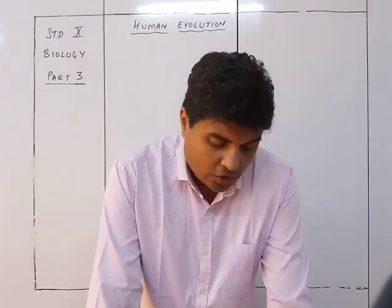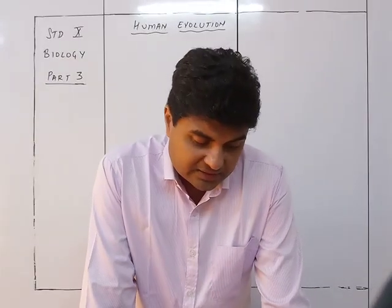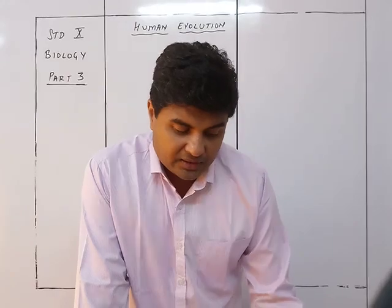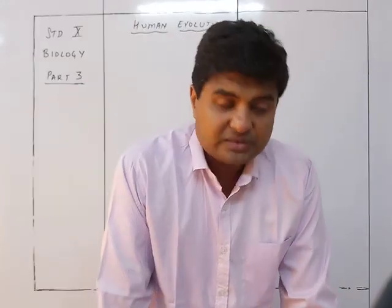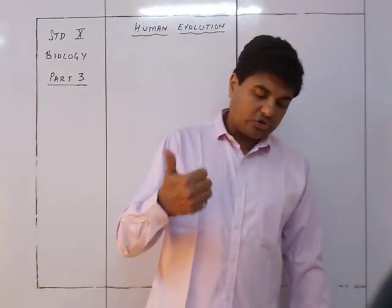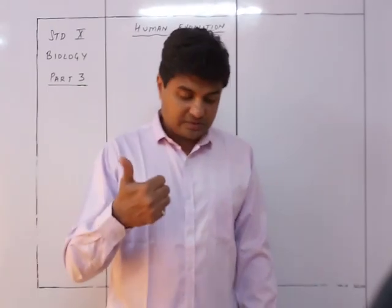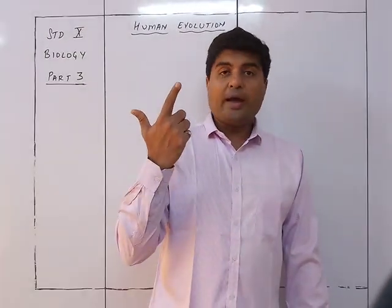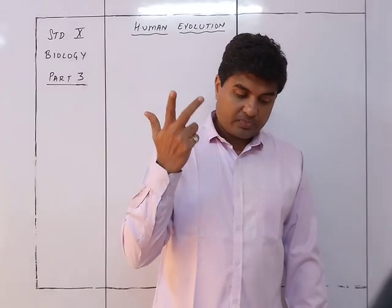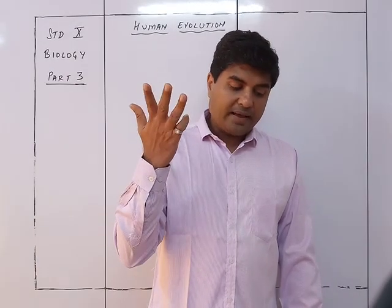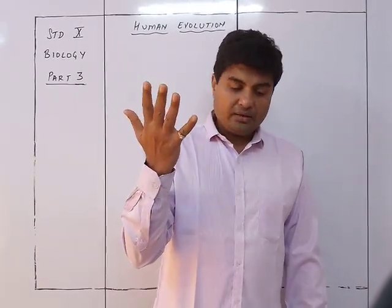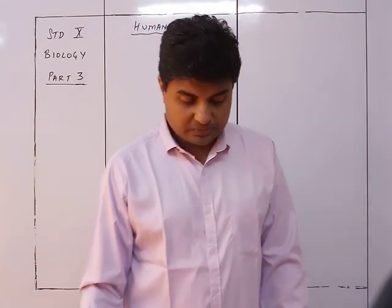Homo habilis, Homo erectus, Neanderthals, Cro-Magnon, and Homo sapiens sapiens — that is the modern man. So the pathway is: Australopithecus, Homo habilis, Homo erectus, Neanderthals, Cro-Magnon, and finally Homo sapiens sapiens.